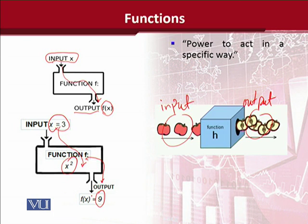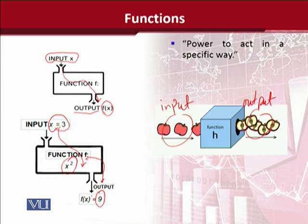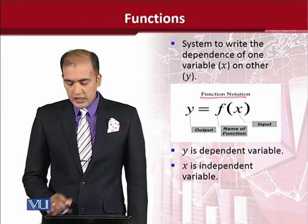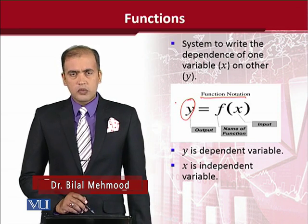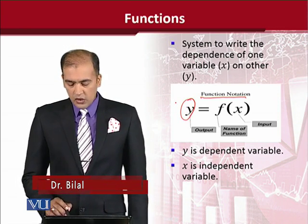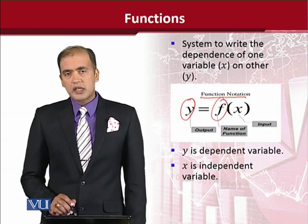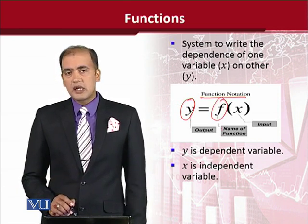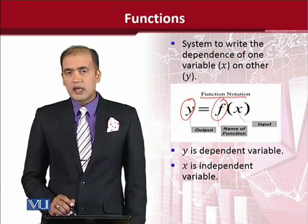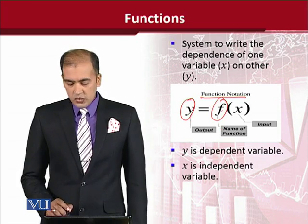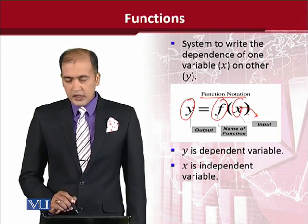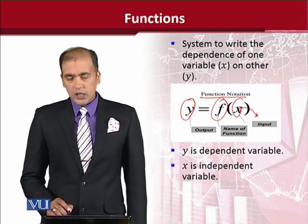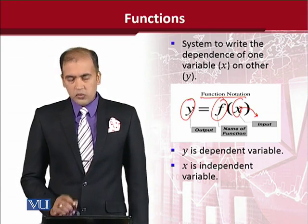Having understood the definition of function, let us see how we can actually write a function in mathematical manner. This is a very simple way of writing the function notation. On the left-hand side, we have the output. The f is a notation specifying that we are dealing with a function. It is not a variable, constant, or parameter. It is showing the notation of a function. And x is basically the input which we provide so that function can perform its process and give us output.